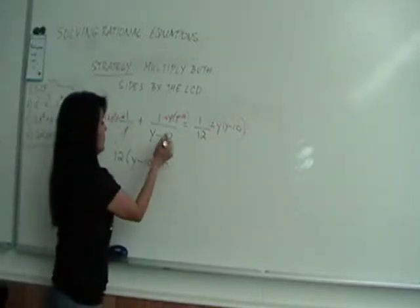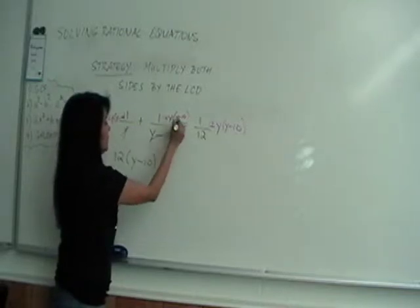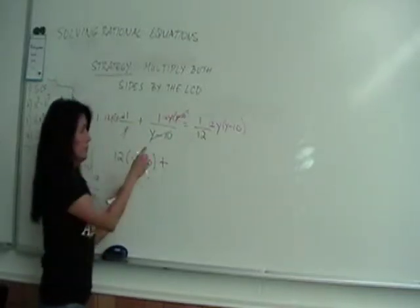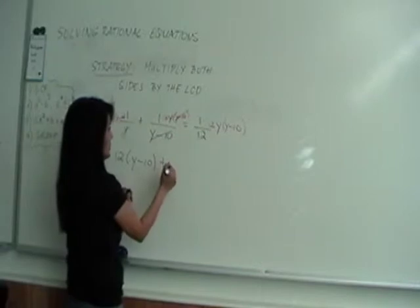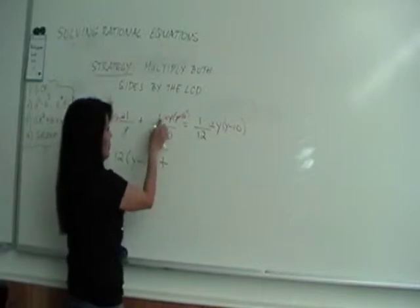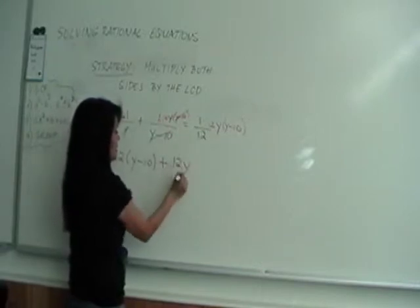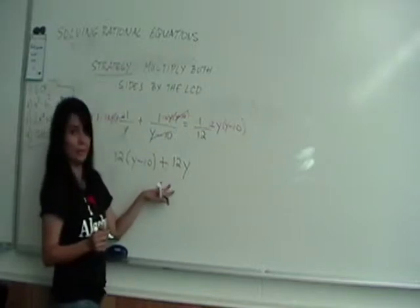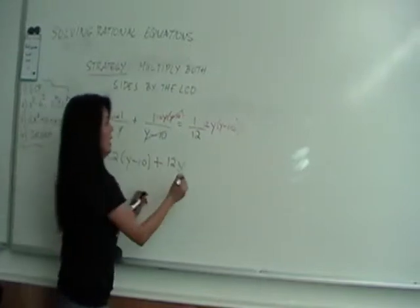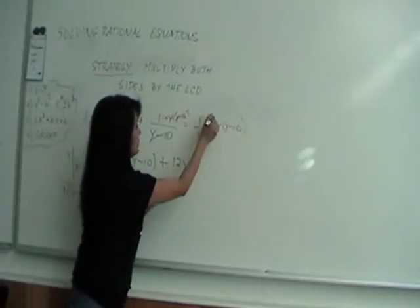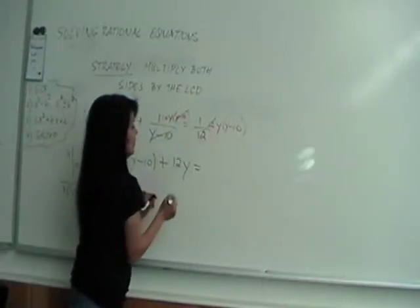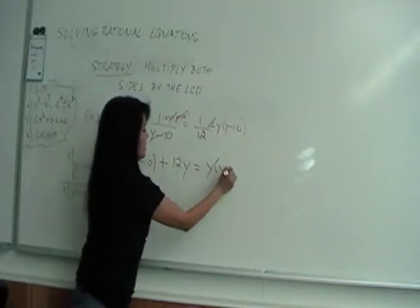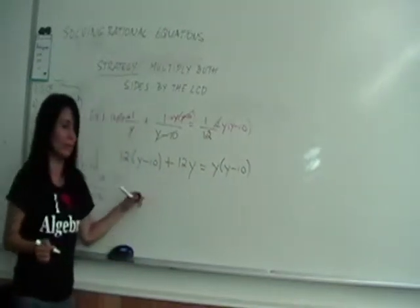Plus, over here, the (y minus 10) and (y minus 10) cancel. You have 1 times 12y, so 12y is by itself with no denominator. On the right side, the 12 and 12 cancel, so you get y times (y minus 10).